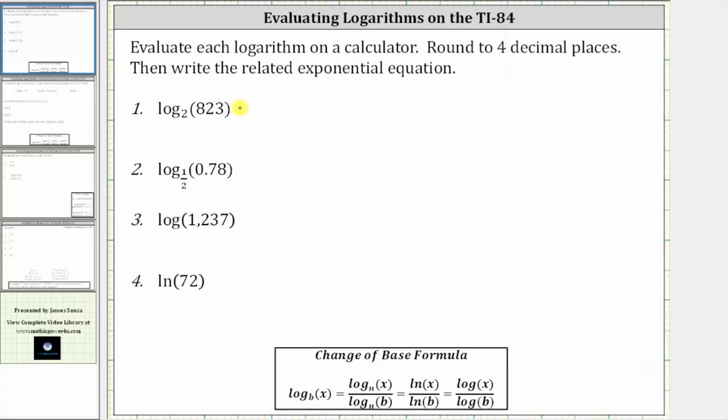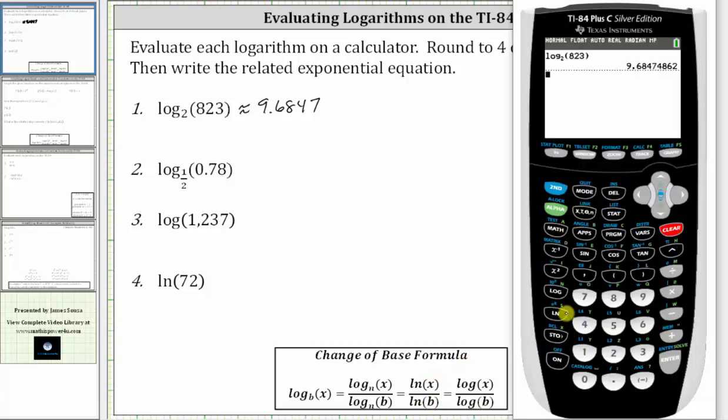So this is an approximate value because it is rounded. Let's verify how we get the same result using the change of base formula shown below. For this first example, let's use the change of base formula with natural log, which means log base B of X equals natural log X divided by natural log B. In our case, natural log 823 closed parenthesis divided by natural log two, which does give us the same result.